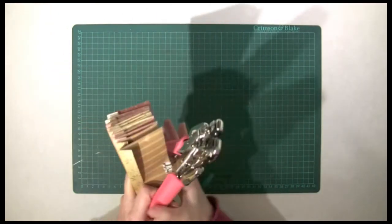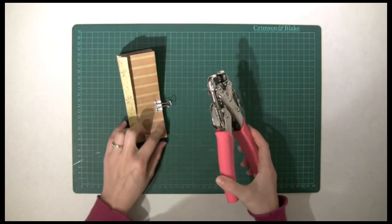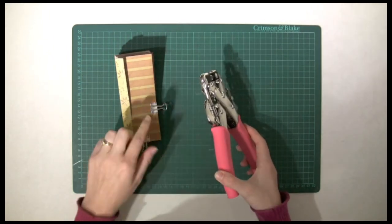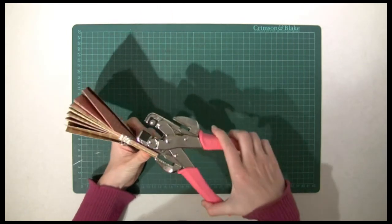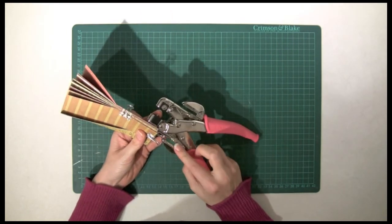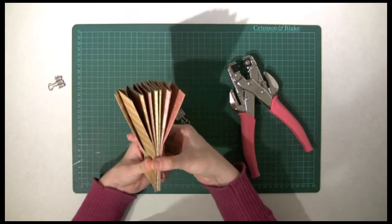I'm going to be using my Crocodile to punch the holes into this section of the mini book. Unfortunately the paper's too thick to go into the side of my Crocodile, so I'm going to have to separate my book.